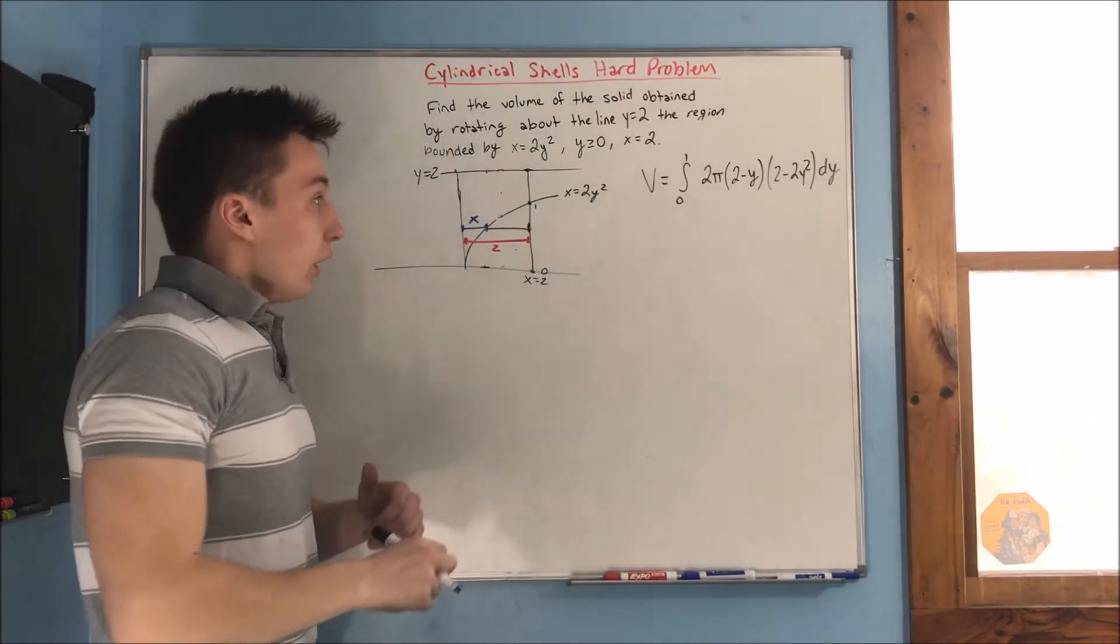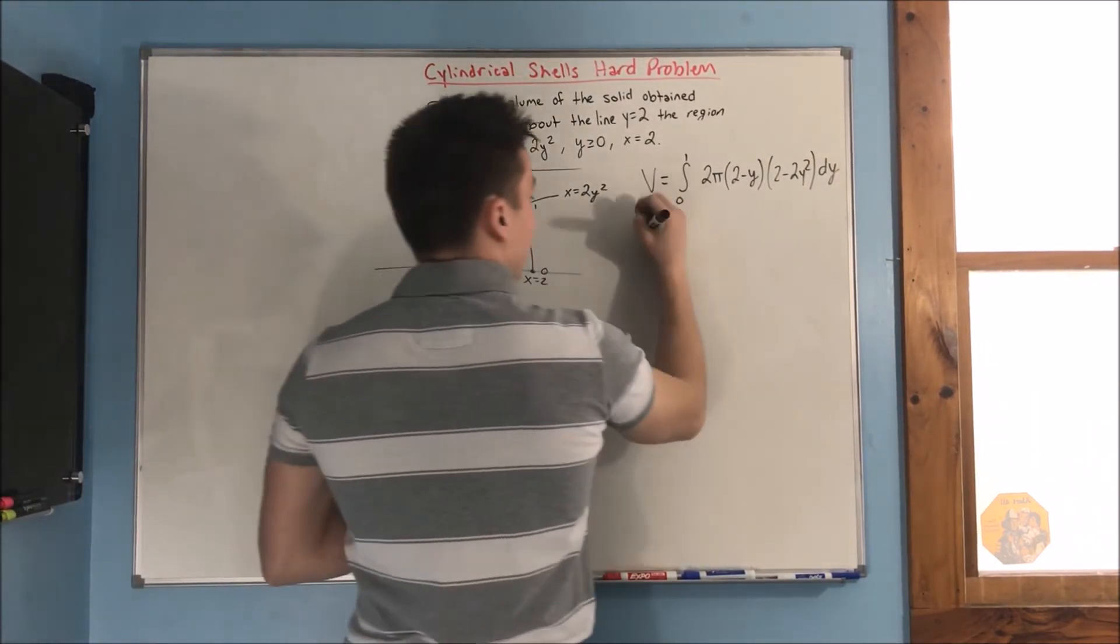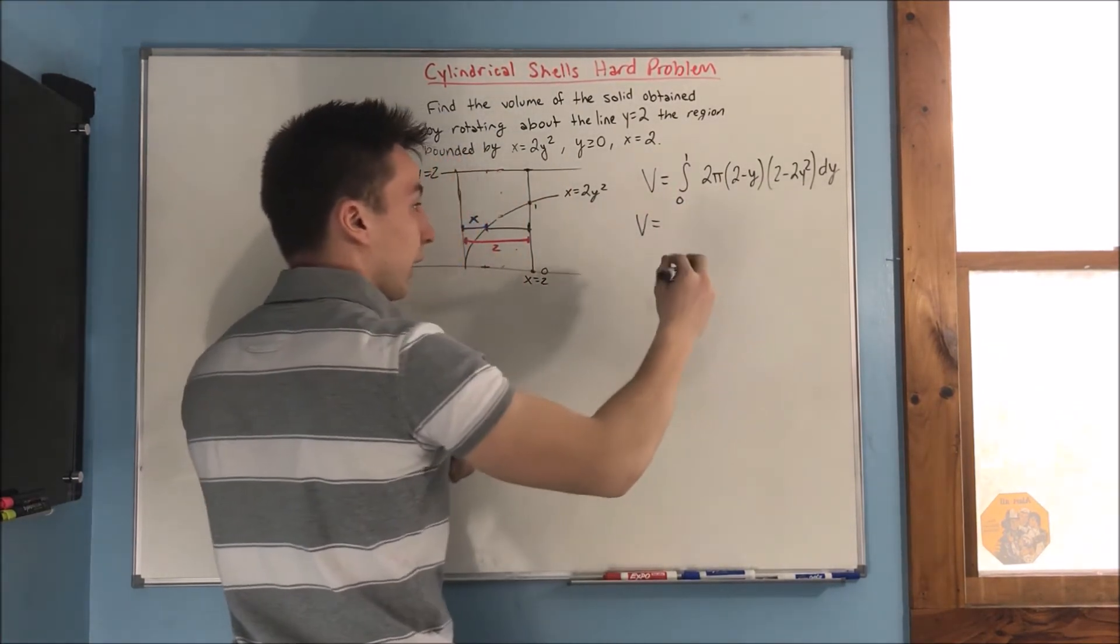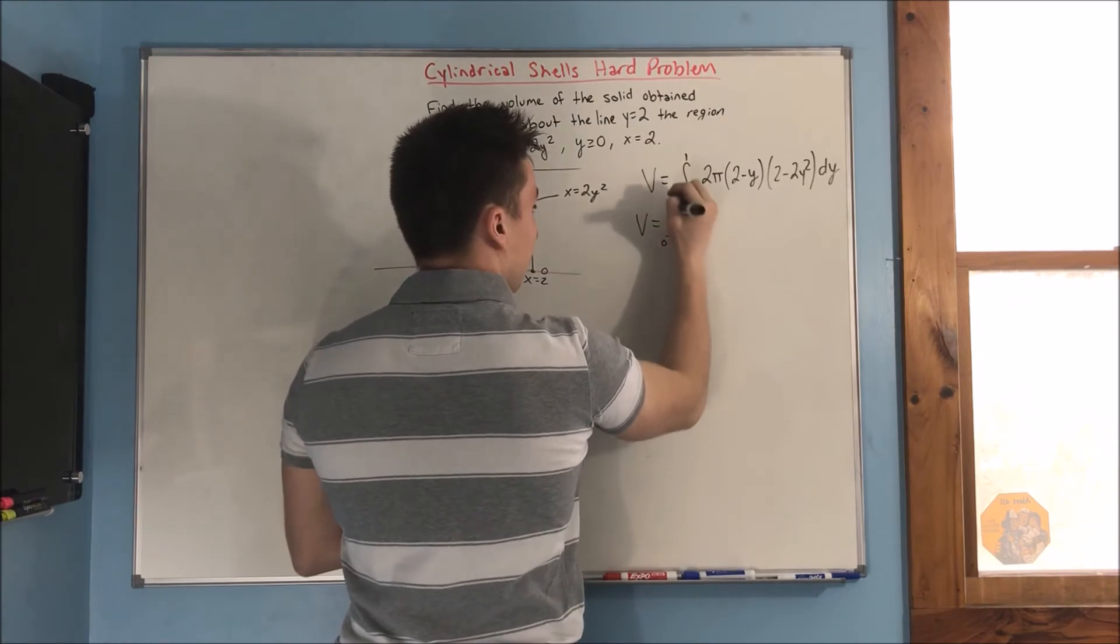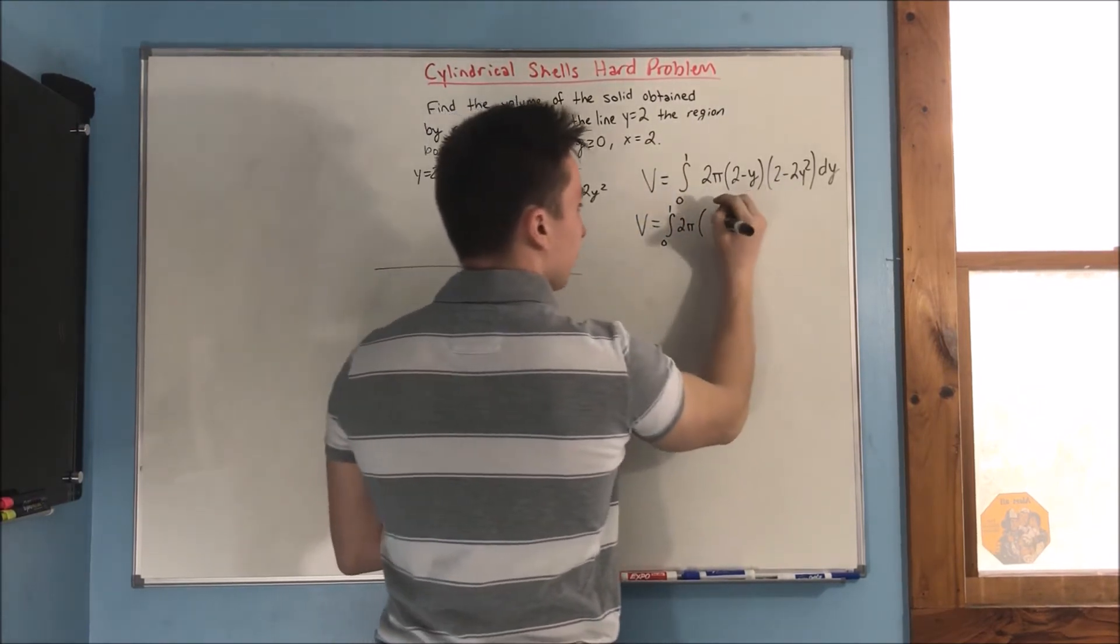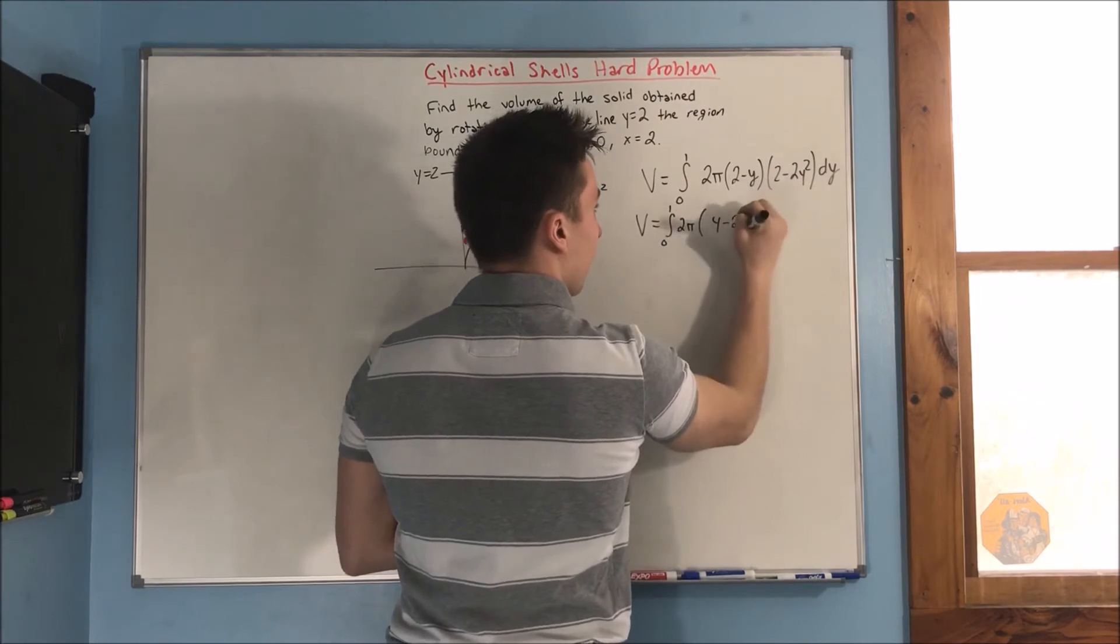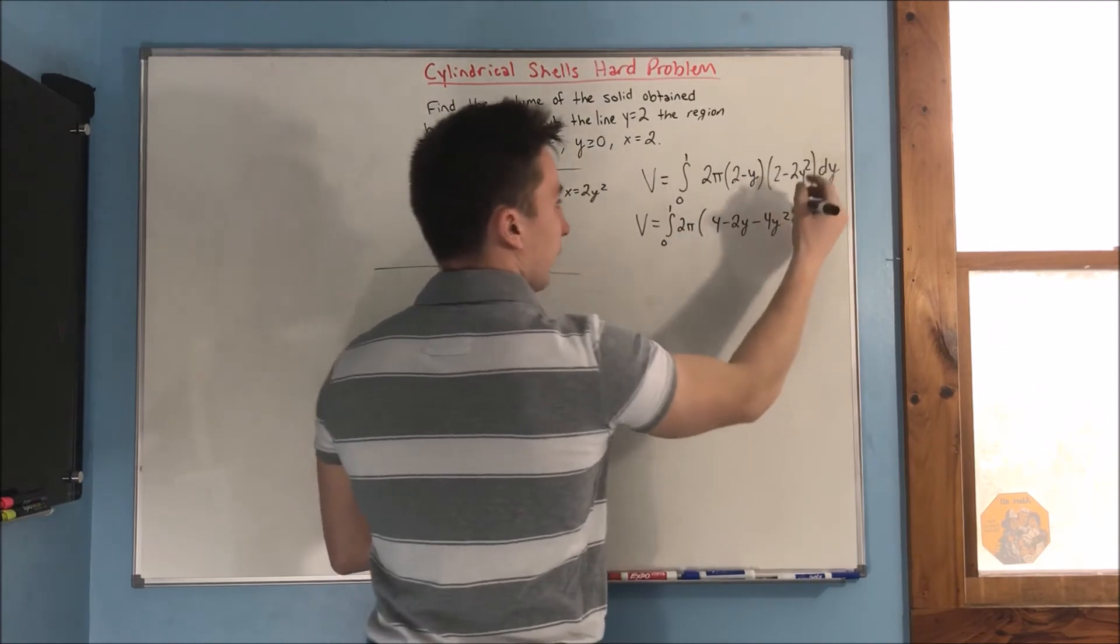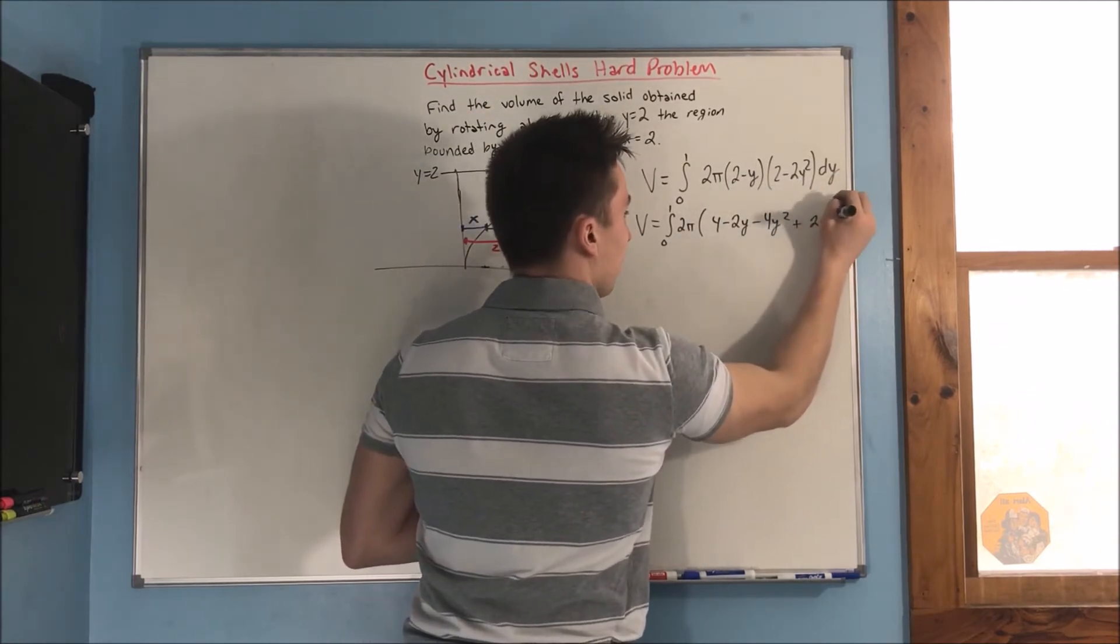Alright? Great. So, now, we can do our foiling out here and get our big equation. 2 times 2 is 4. We get a minus 2y. We're going to get a minus 4y squared and a plus 2y cubed.